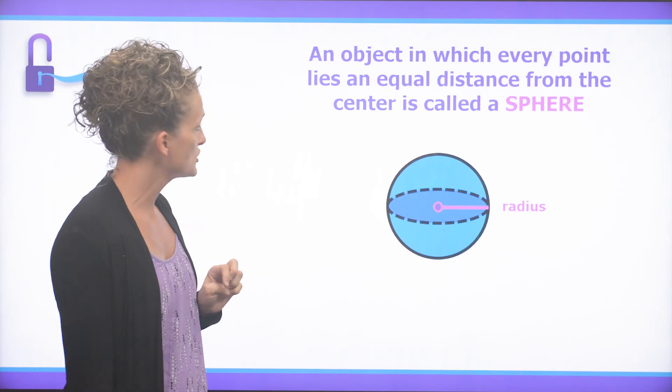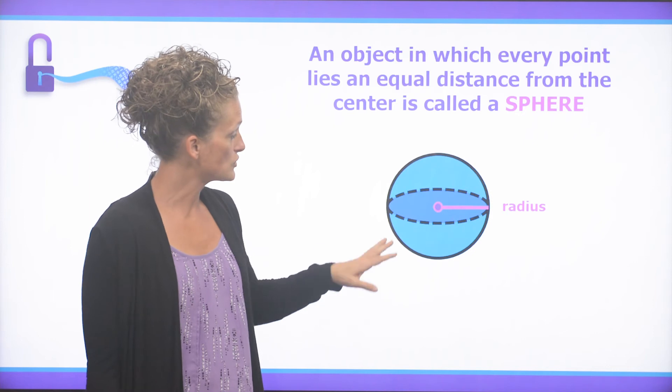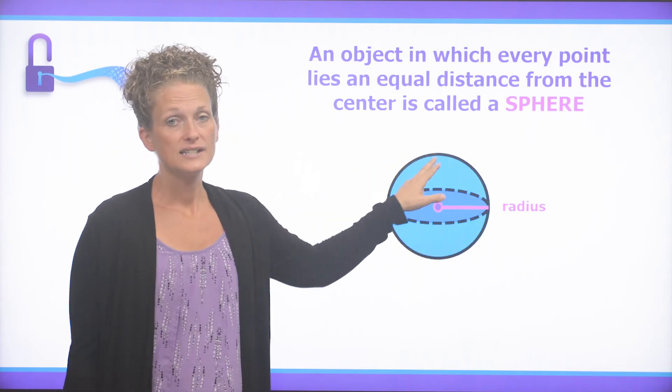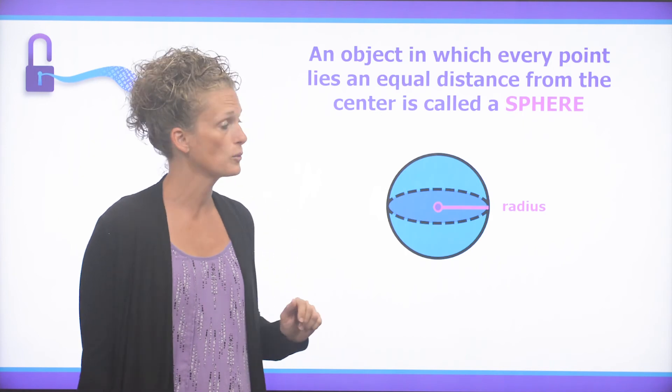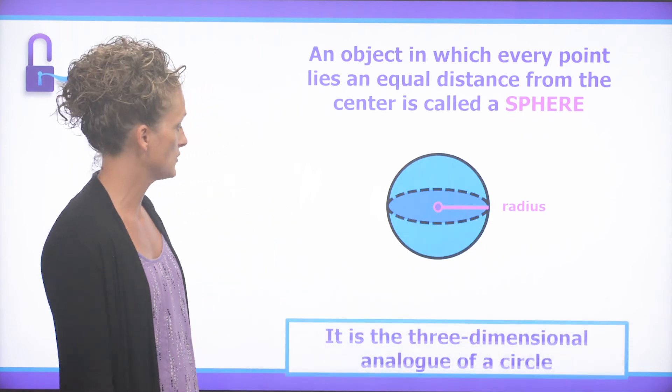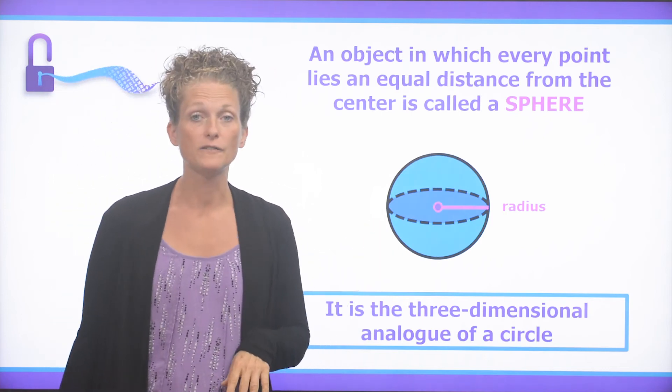An object in which every point lies an equal distance from the center is called a sphere. So if you took any point on the sphere, it doesn't matter where that point is. The distance to the center will be the same no matter where you are, and that's actually called the radius of the sphere. This is the three-dimensional analog of a circle.